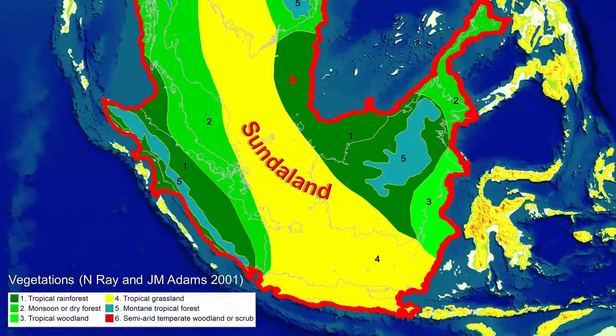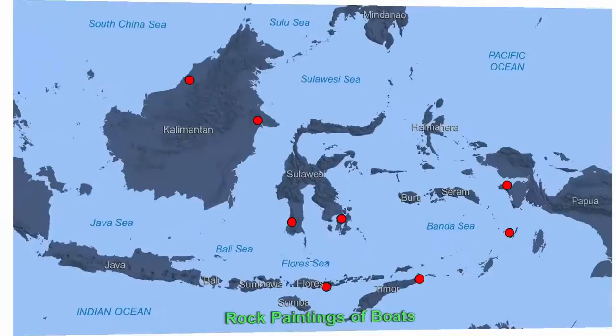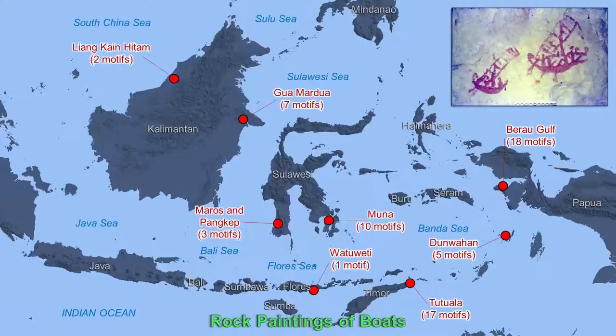Vegetation in Sundaland during the last glacial maximum consisted of tropical rainforests, monsoon or dry forests, tropical woodlands, tropical grassland, and montane tropical forest. On this slide I'm showing you the distribution of rock paintings in Southeast Asia. Most of these paintings are estimated to be more than 10,000 years old. Only one place has been carbon dated — that is in South Sulawesi, to about 40,000 years old. Some of the paintings depict boats, suggesting they already had the technology from a very ancient time. The ones in Maros were carbon dated to about 40,000 years old.